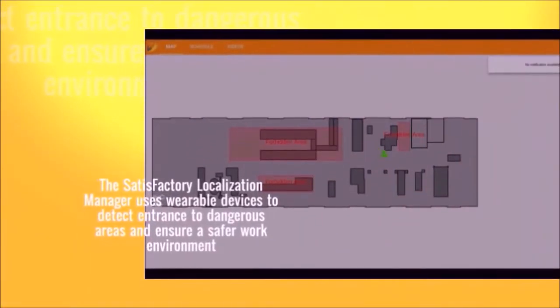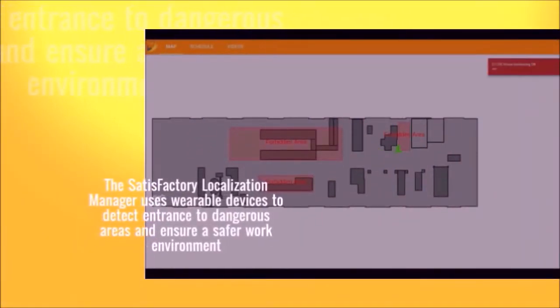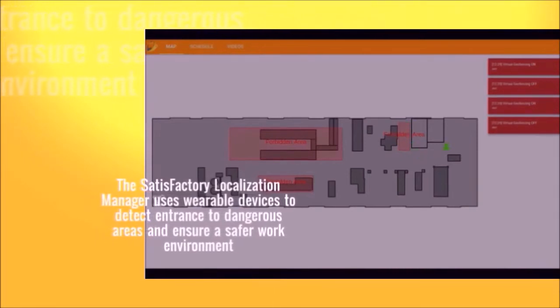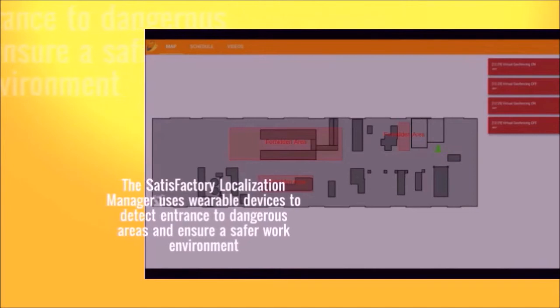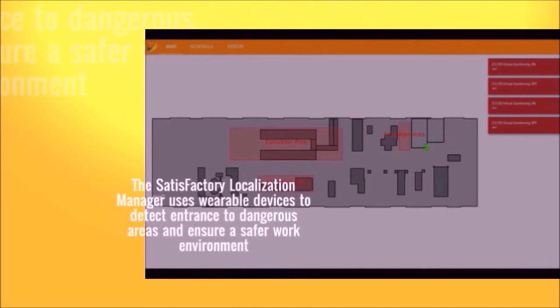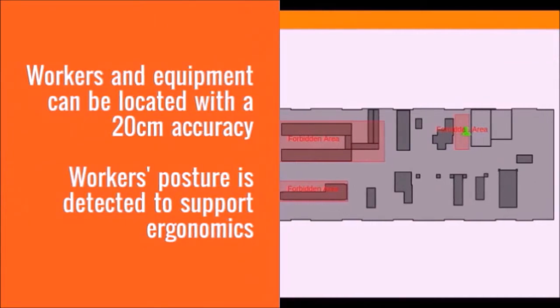The Satisfactory localization manager uses wearable devices to detect entrance to dangerous areas and ensure a safer work environment. The dangerous areas can be fixed or dynamic, based on real-time data from the shop floor. Workers and equipment can be located with about 20cm accuracy indoors and outdoors. Moreover, detecting workers' postures, the localization manager supports good ergonomic practices.